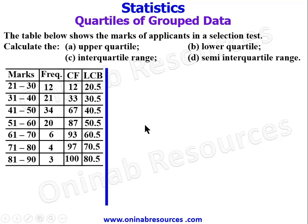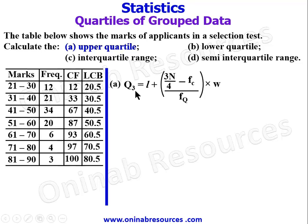These are the values we need to calculate the upper quartile, lower quartile, interquartile range, and semi-interquartile range. We start with part A, the upper quartile. Bringing in our formula: Q3 equals L plus (3n over 4 minus fc) all over fq, multiplied by w. We need to identify the upper quartile class interval by first finding 3n over 4.